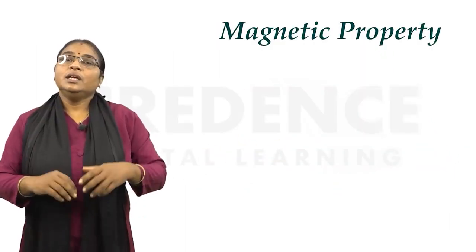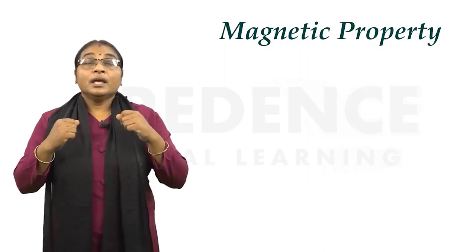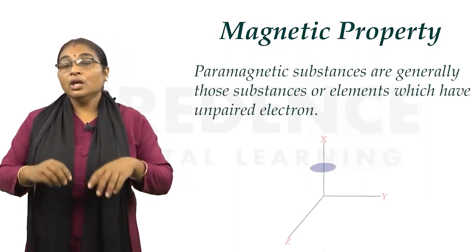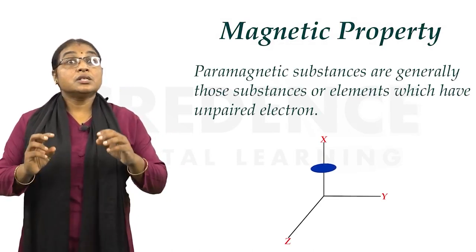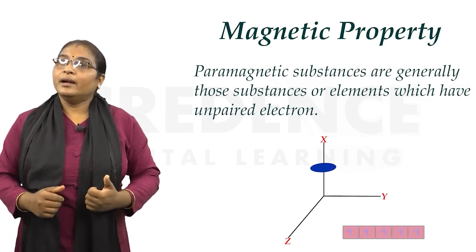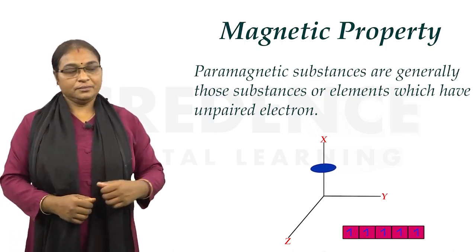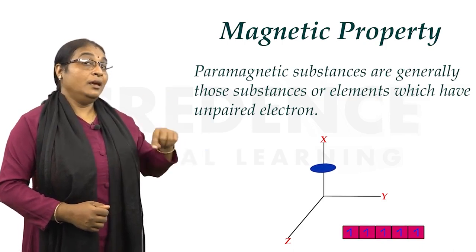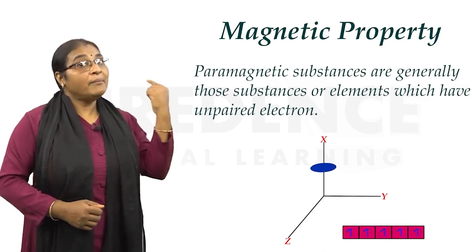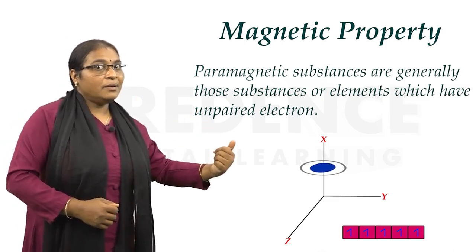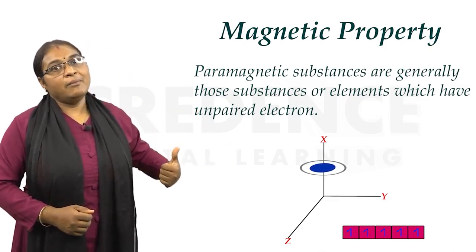Paramagnetic substances are generally those elements which have unpaired electrons. These unpaired electrons spin and generate their own magnetic field, which then interacts with the external magnetic field, causing attraction.